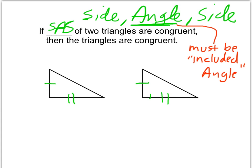However, if instead of those two angles we knew that these two angles were congruent, that is not enough to say the triangles are congruent, because that's not the included angle. By included, I mean it has to touch the two sides that we know something about. For example, if we knew that these pairs of sides were congruent and these sides were congruent, we could still use side-angle-side if we knew that these angles were congruent, because they're the included angles — they follow the sides that we know something about.